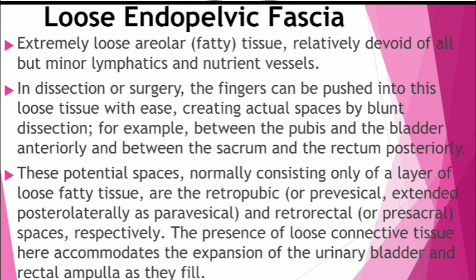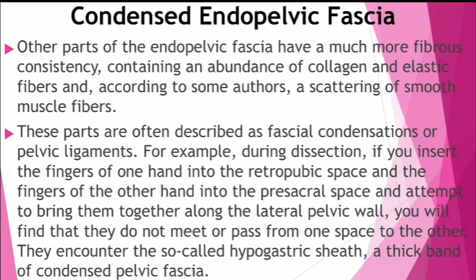Other parts of the endopelvic fascia have fibrous consistency — that's the condensed endopelvic fascia. It contains an abundance of collagen and elastic fibers, and according to some, also smooth muscle fibers. This condensed endopelvic fascia is called fascial condensation of fibrous tissue, and it presents as pelvic ligaments. During dissection, when fingers are placed in the rectal space and the presacral space and brought together along the lateral pelvic wall, they do not meet because of this condensed endopelvic fascia.